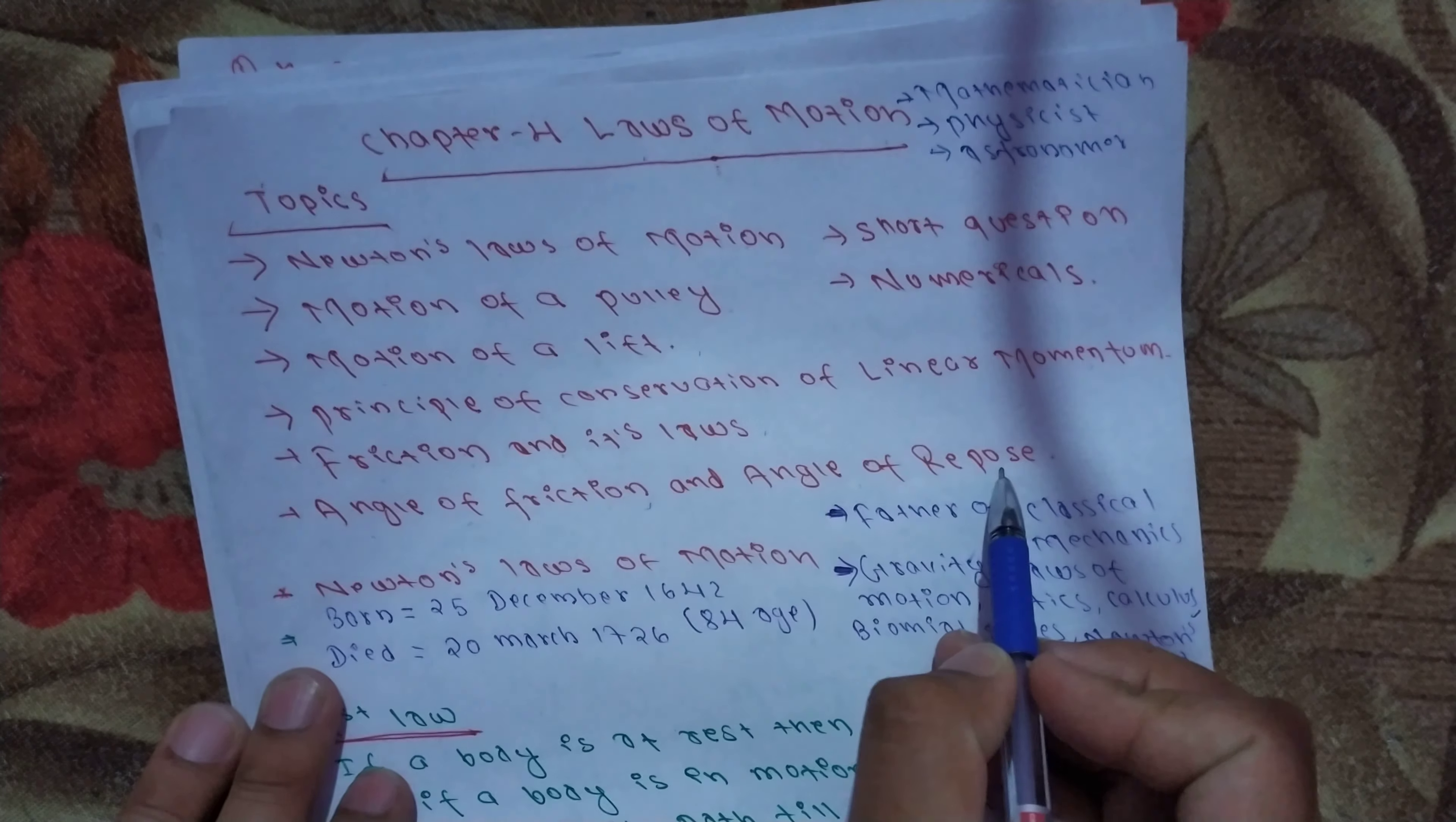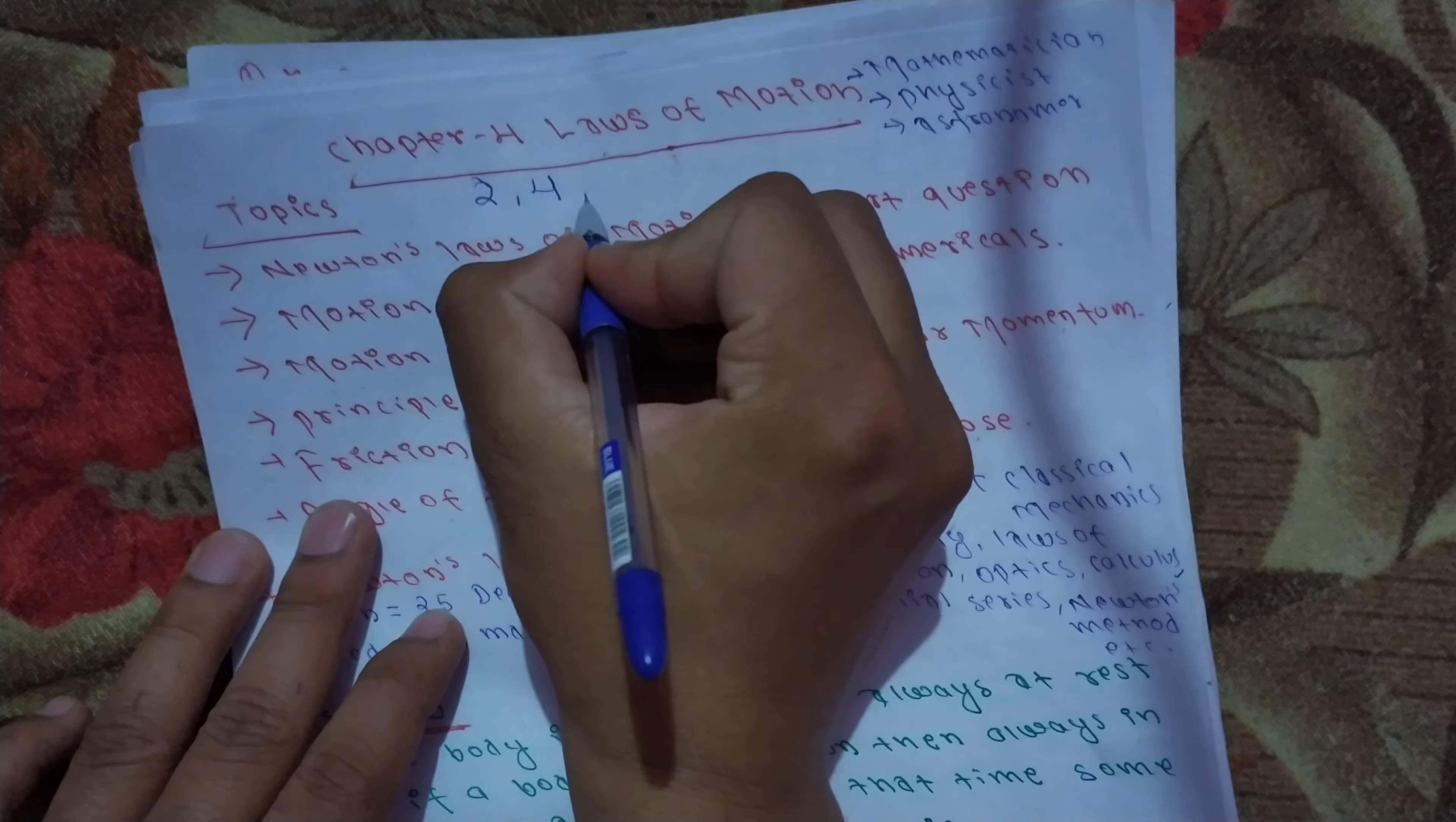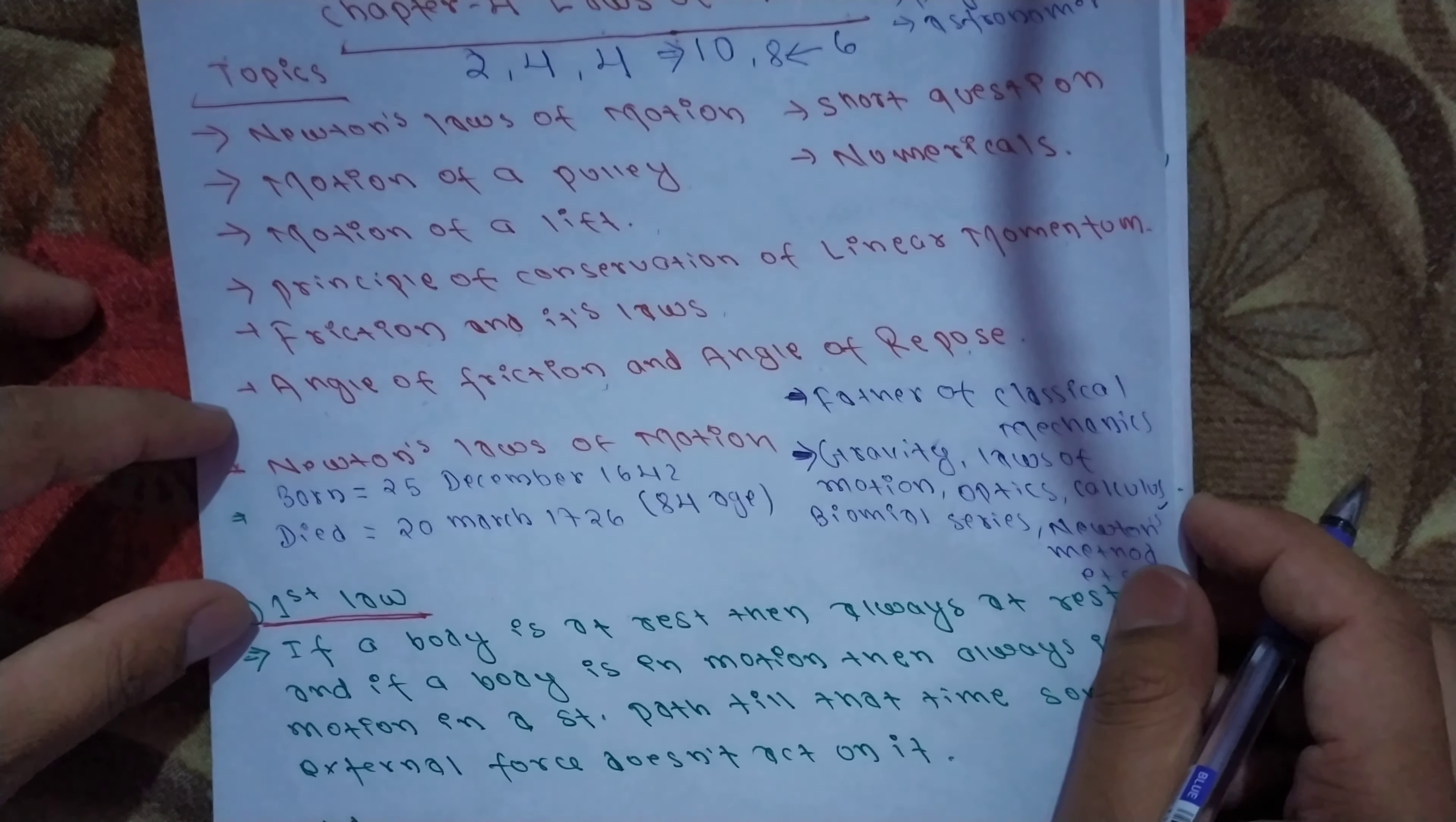Angle of friction and angle of repose. This chapter has two marks on short questions, four marks on long questions, and four marks on numericals. The total is 10 marks. This chapter says 8 marks should get, and 8 marks is the limit.